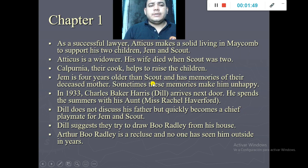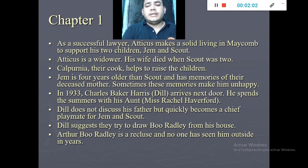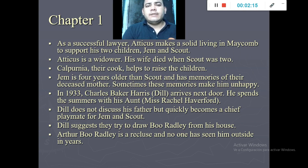A little later in chapter number one, Atticus is a successful lawyer who made a solid living in Maycomb to support his children. He is a widower — his wife died when the kids were very small; Scout was two years old when her mother died. There is a very important woman named Calpurnia, an African-American woman who takes care of the children and cooks for the family.